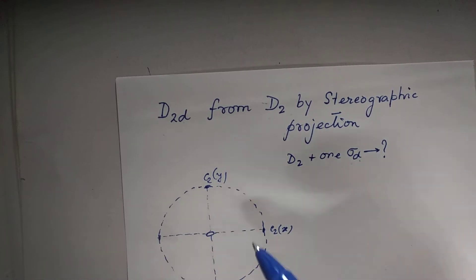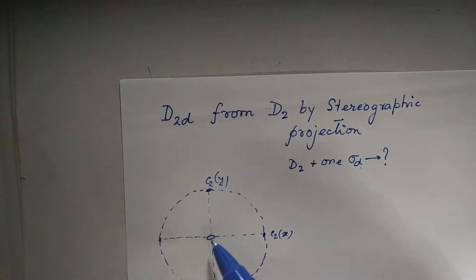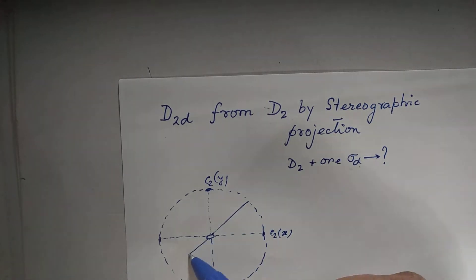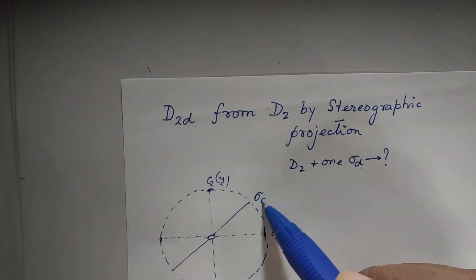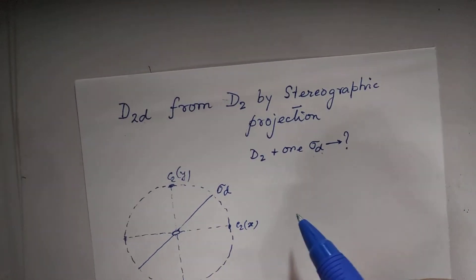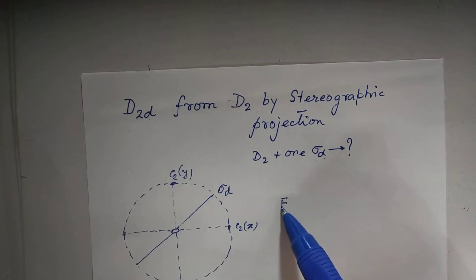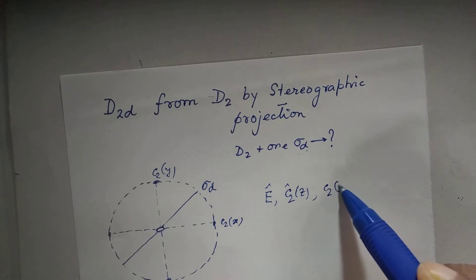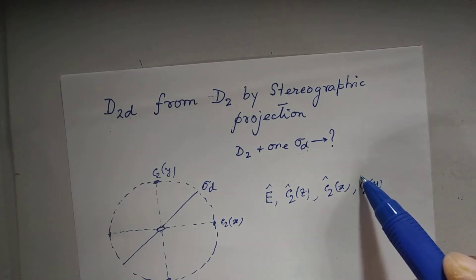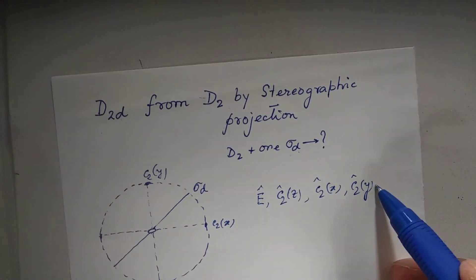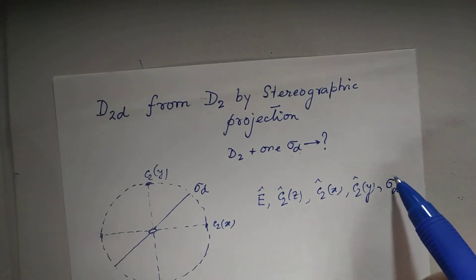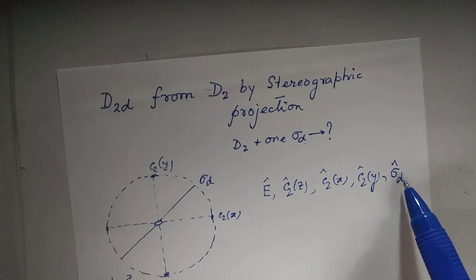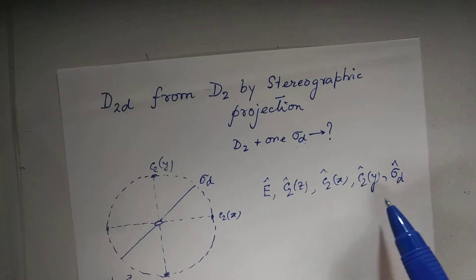Now we want to add one dihedral plane. A dihedral plane must bisect the angle between adjacent C2 axes. So a dihedral plane is indicated by this solid line — let us call it sigma_d. In D2 we have these symmetry operators, and we now add sigma_d to this list. By the closure property, the product of sigma_d with all existing operations must also be present in the group.